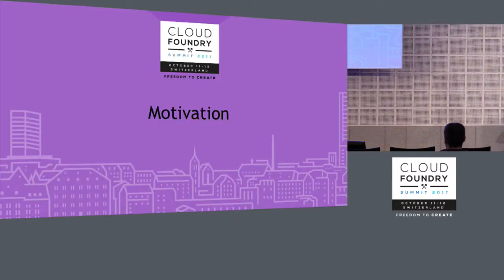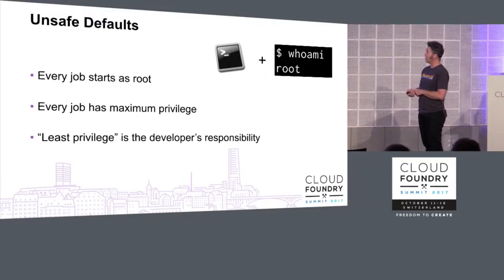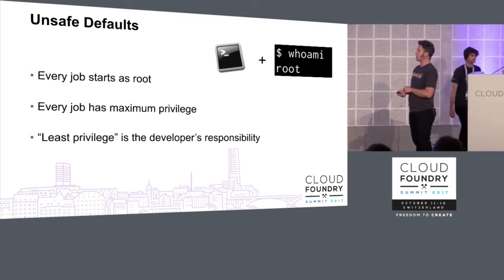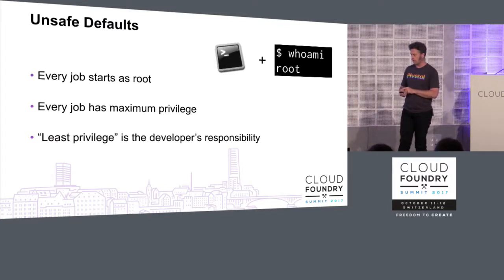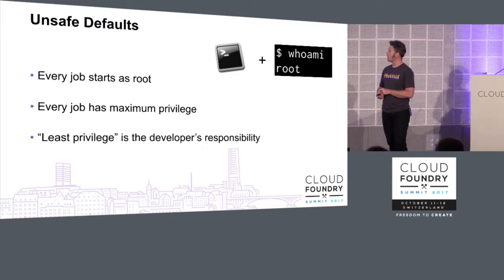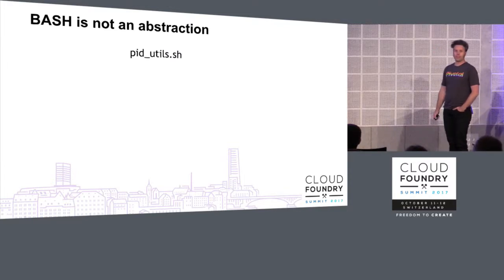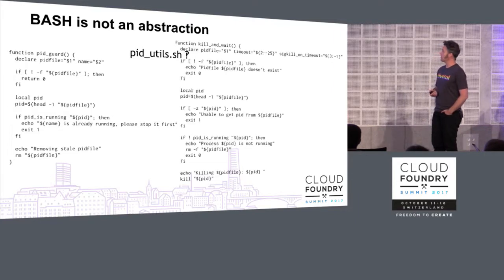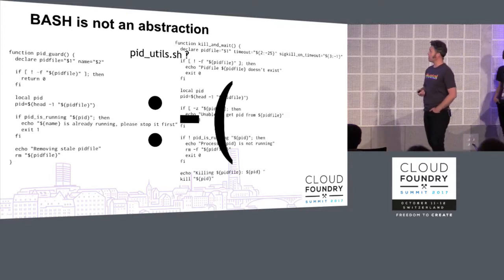So, motivation. You probably have some idea why we'd want to run containers instead of just having jobs running on the VM. The first is the defaults are unsafe — every job starts as root. Every job has maximum privileges, and the best practice of least privilege is left as an exercise to the developer, with varying degrees of success. Bash is not a great abstraction for running processes. PID utils — you might have seen this, some of you might have copied it into your release. It starts out kind of simple and gets a little more complex.